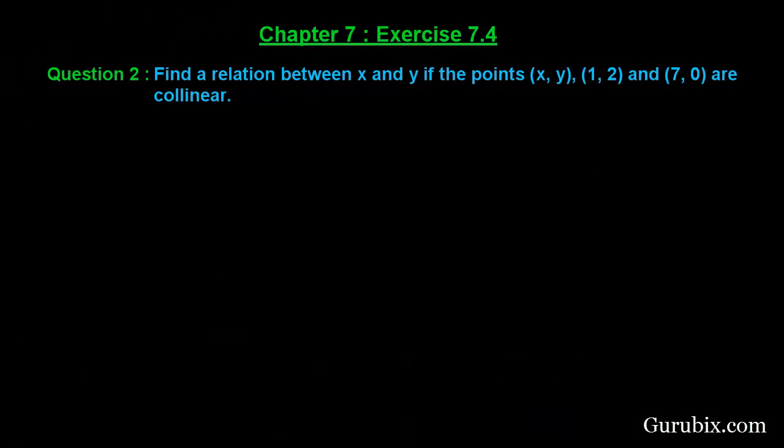Welcome friends, let us solve question number 2 of exercise 7.4 of chapter 7. The question says find a relation between x and y if the points (x, y), (1, 2) and (7, 0) are collinear. So let us see how to solve this question.